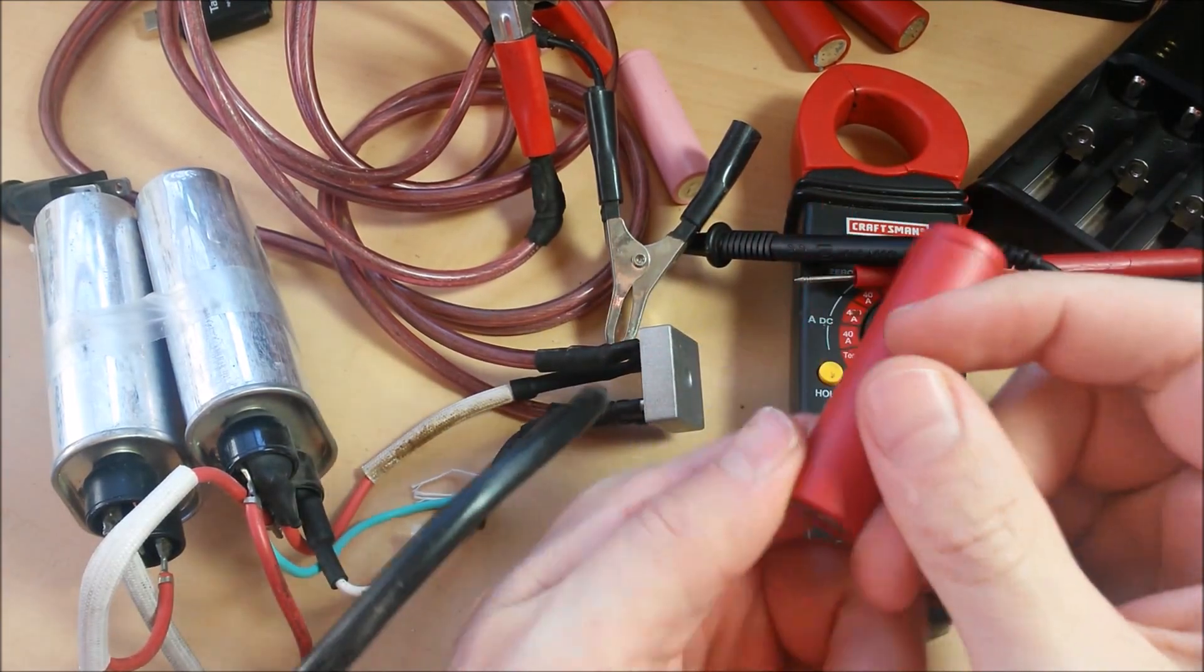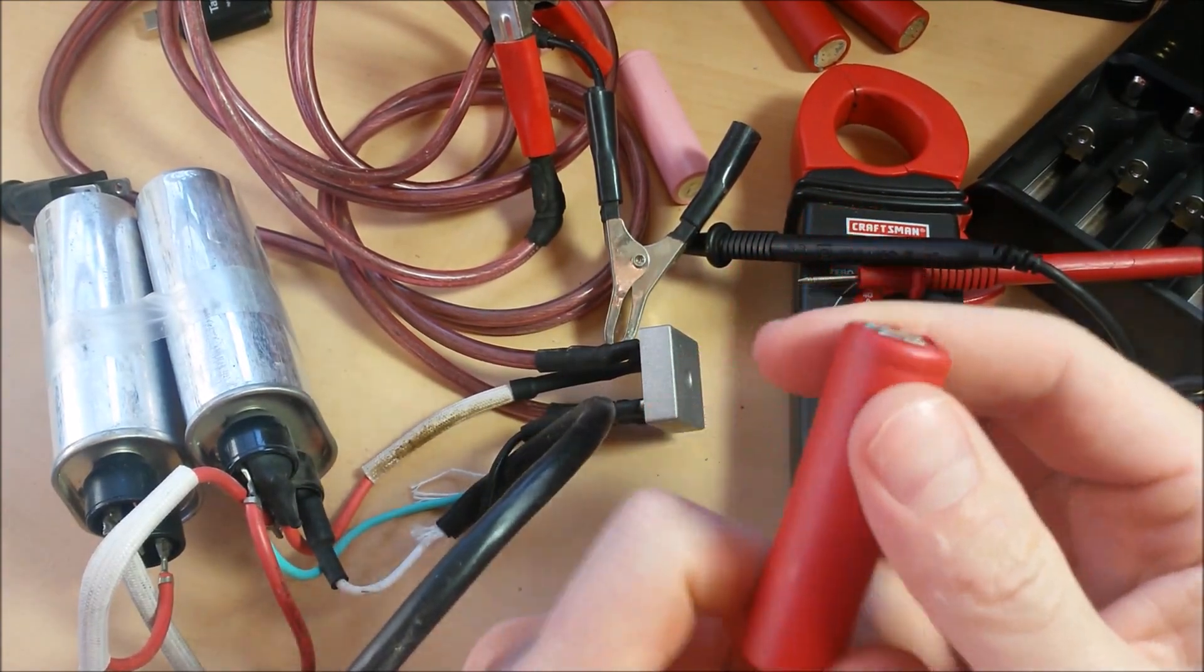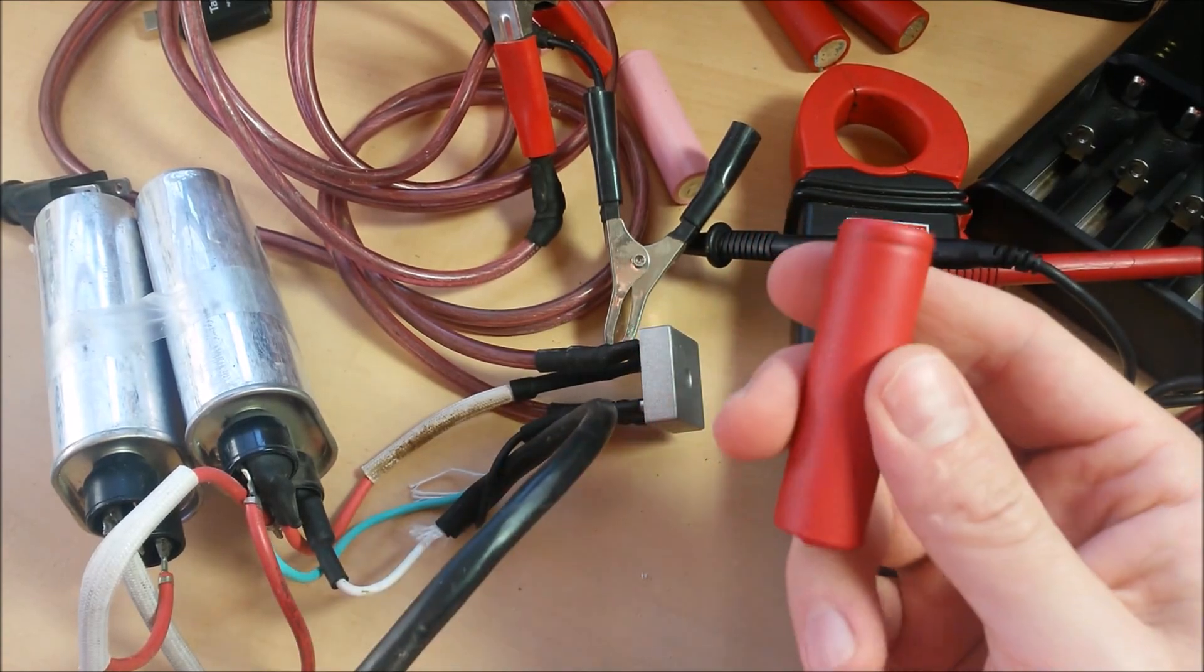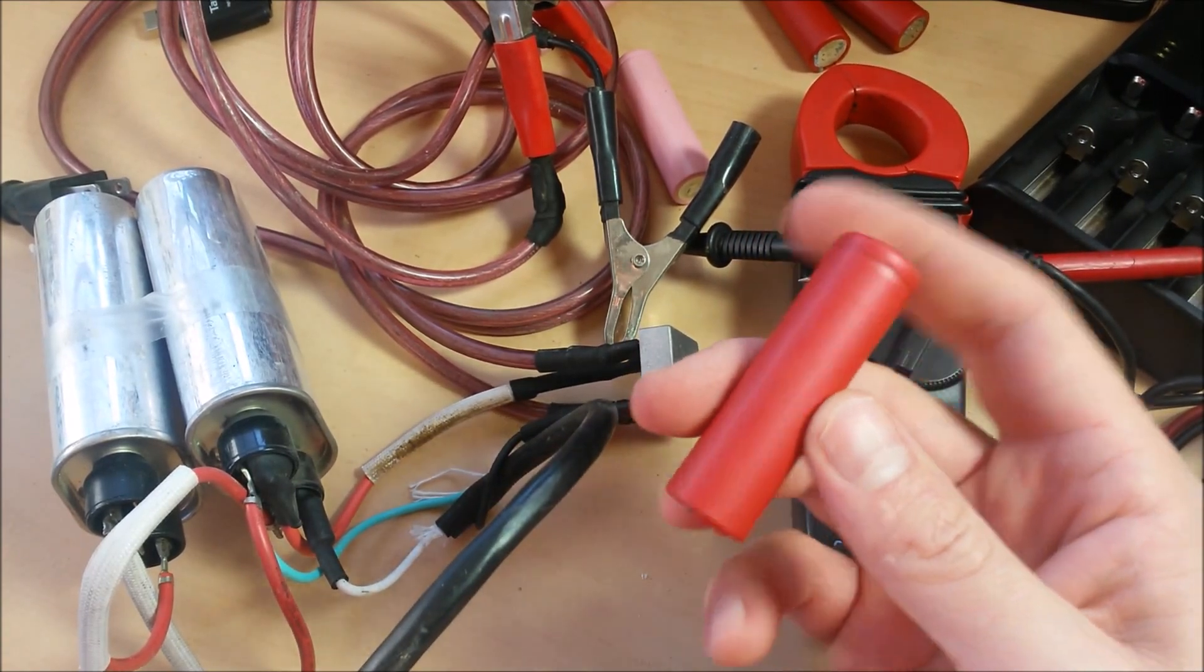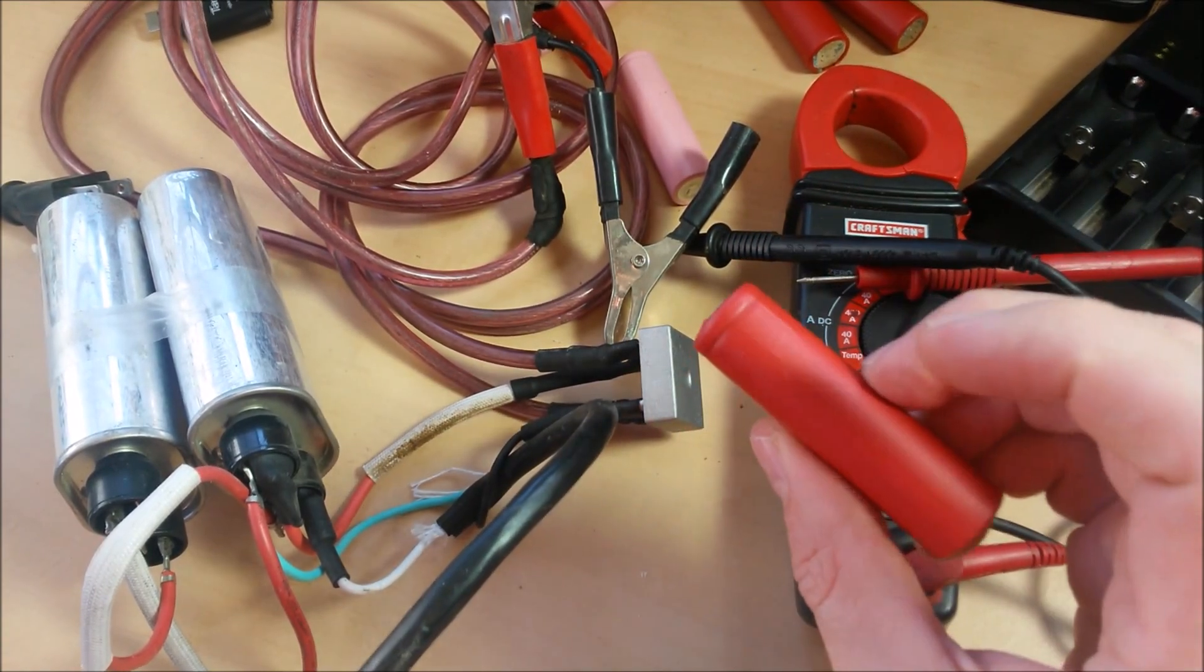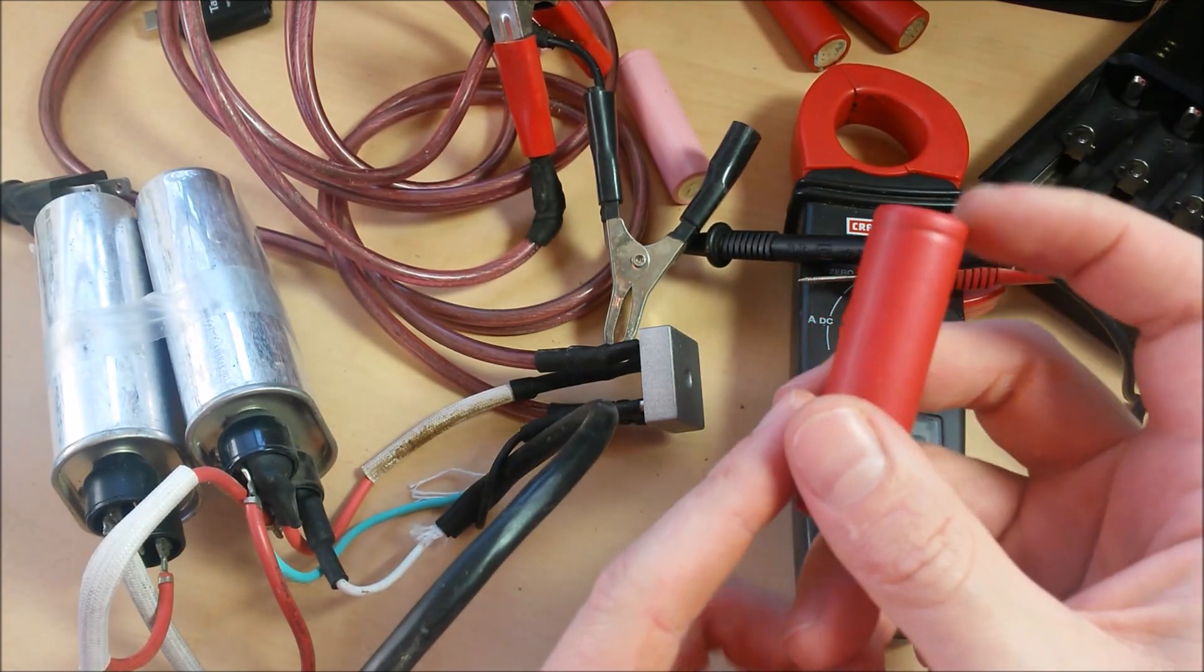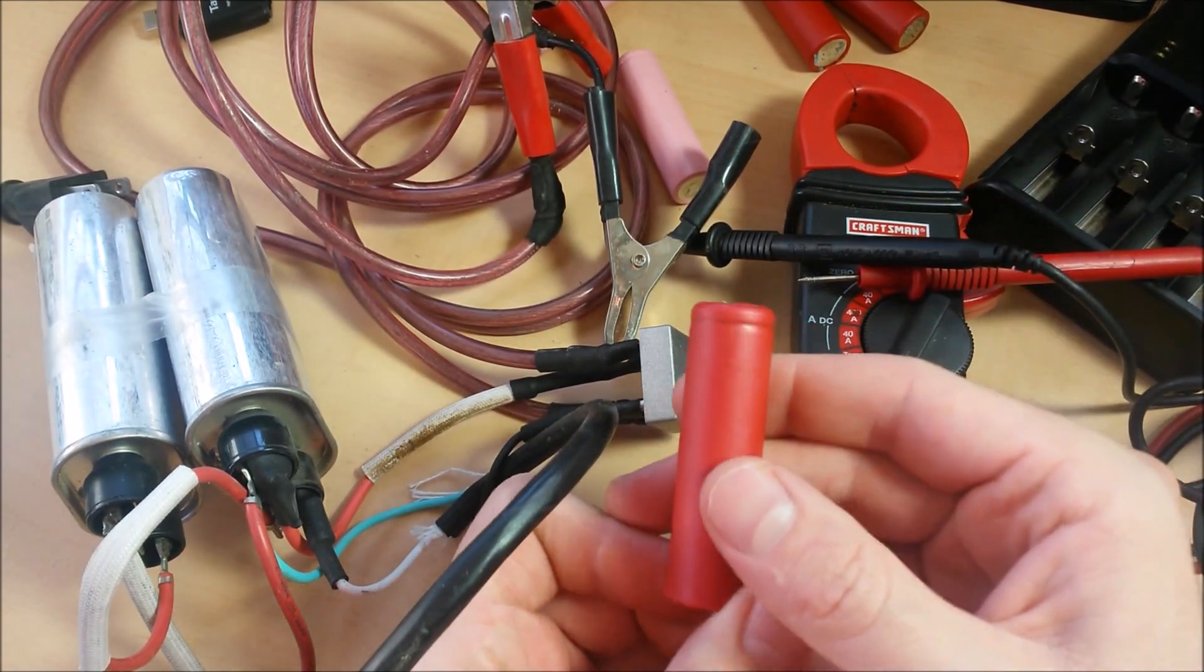Hey guys, today we're messing around with 18650 batteries. These are 3.7 volt lithium ion batteries. You can pull these out of a laptop battery pack or cordless drill battery pack. Actually, I got these Sanyo cells out of a Ryobi 18 volt lithium ion battery pack.